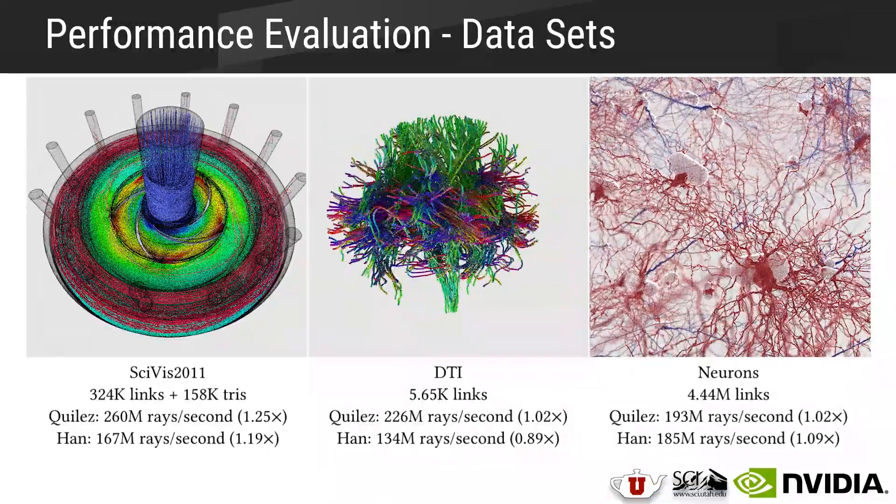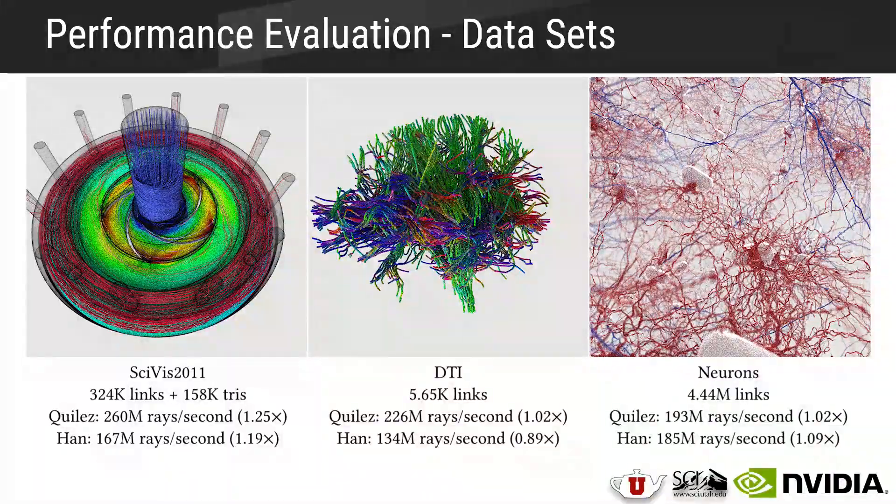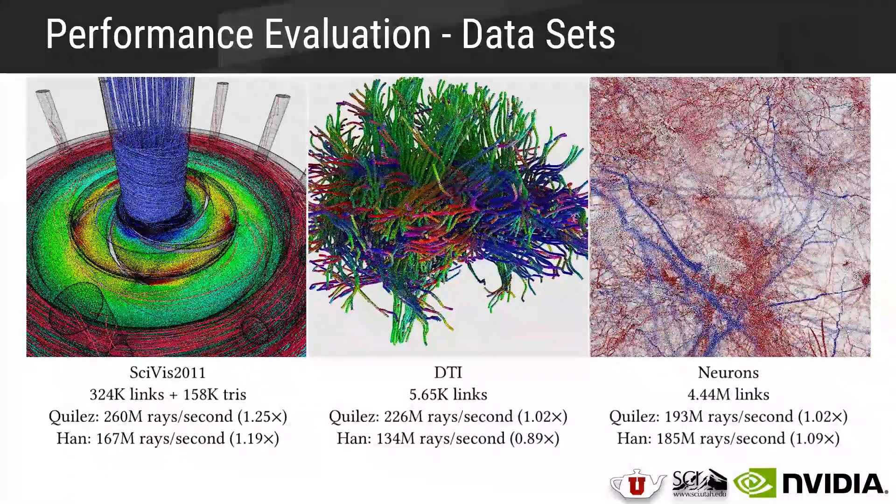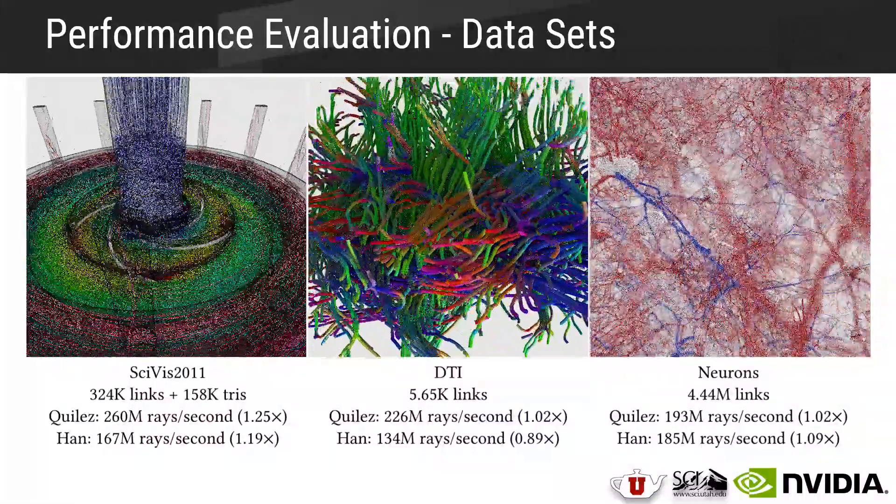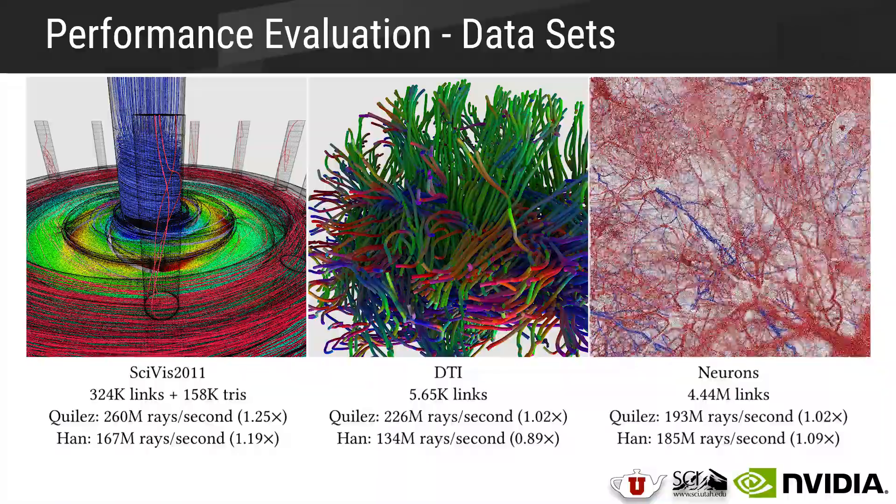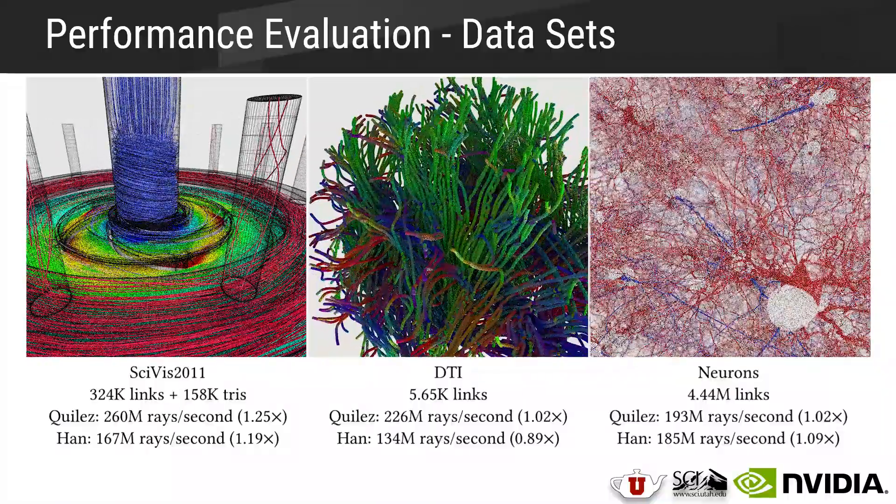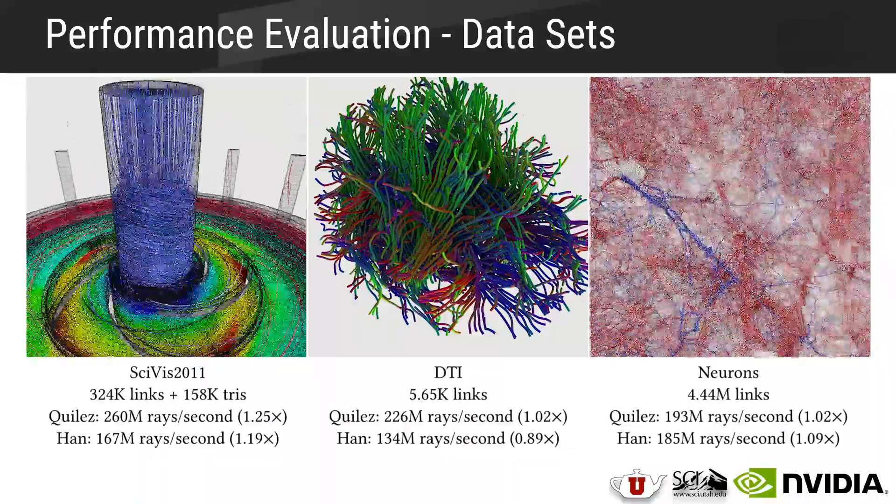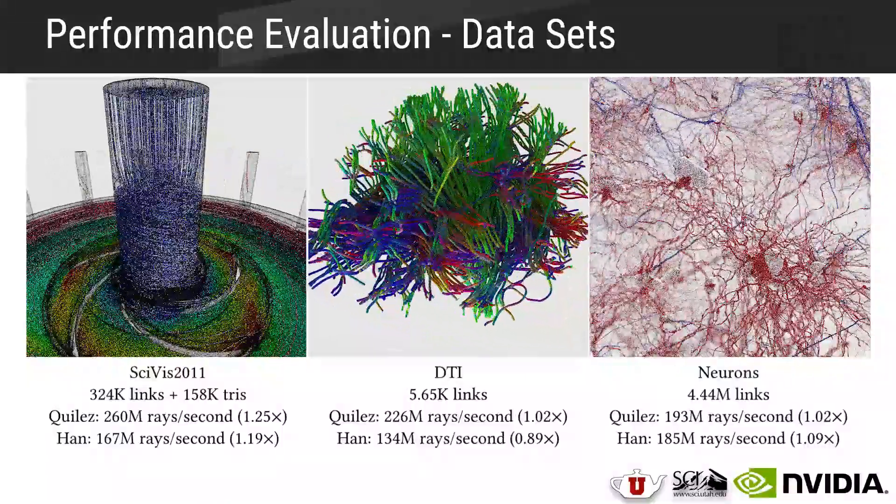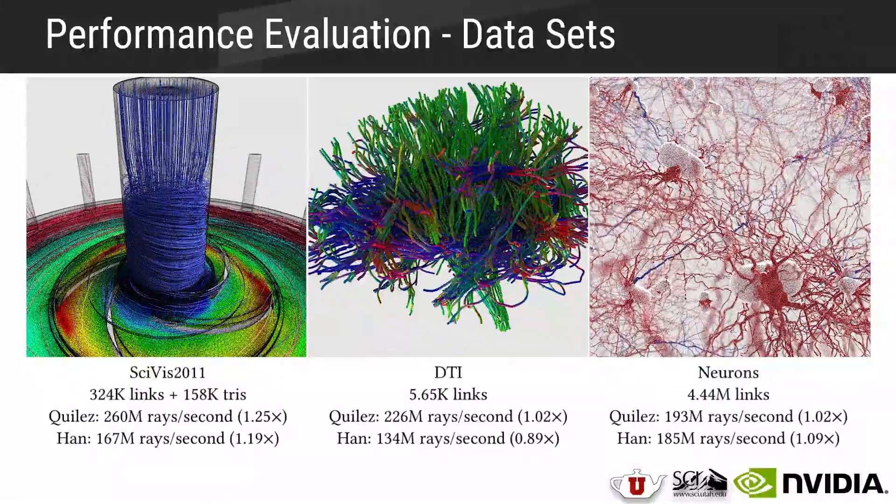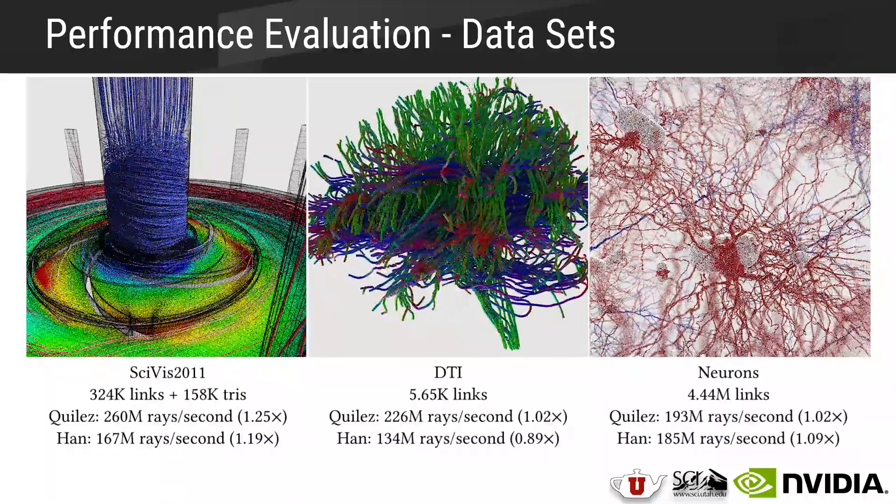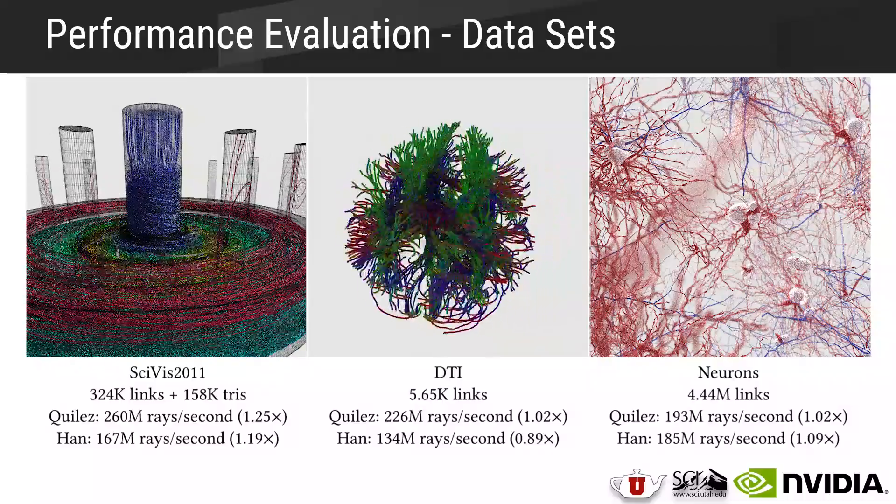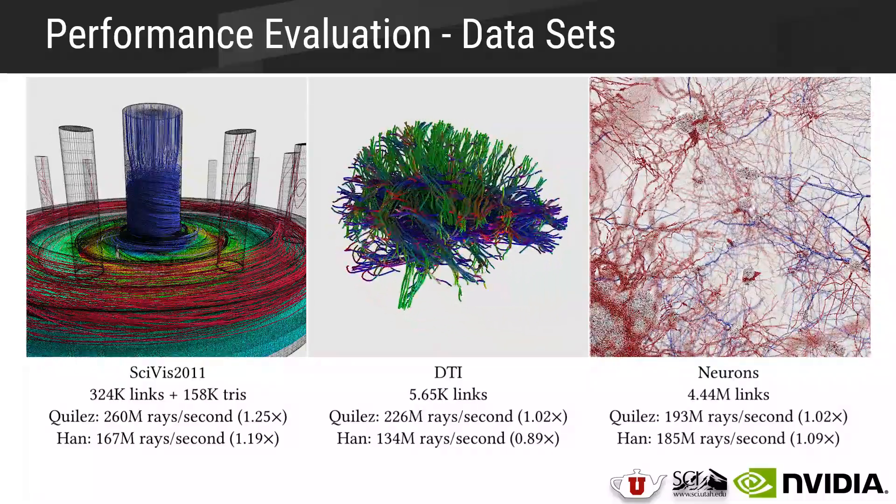For the SciVis data sets from left to right, we have an IEEE visualization data set from 2011, a DTI tractography data set, and a collection of neurons from the Neuromorpho database. For these data sets, we see mixed results. Though our method is never much worse, it doesn't actually achieve significant performance improvements either. We see about a 25% performance improvement for the SciVis data set on the left, but then the other two don't really improve that much. We have an explanation for why this is, and I'll get to that in a moment.